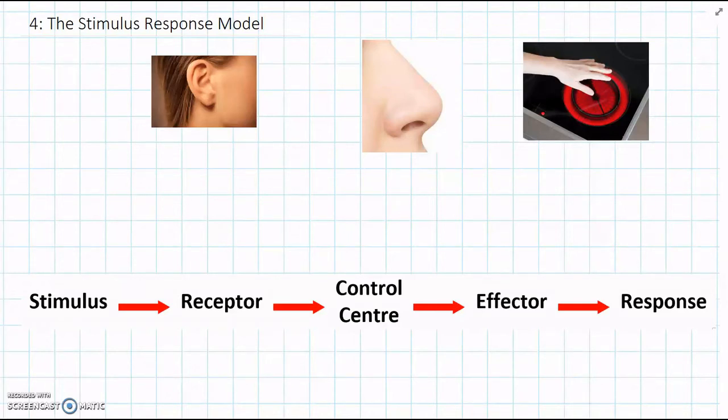We've learnt about different stimuli in the environment and how animals can sense those stimuli using receptor cells. For example, we know that our ears have sound receptors to detect sounds. We know that inside our nose we have chemical receptors that can detect smells. And on our hands we can detect heat with our touch receptors and temperature receptors.